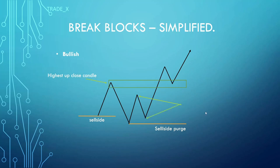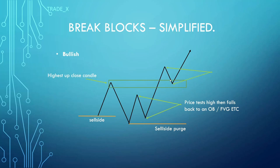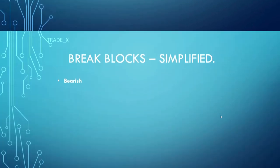Price moves higher, retests the highest up-close candle, an order block, or a fair value gap before moving lower. If price doesn't break the low, it falls into another order block, mitigation block, or a PD array for price to move higher. We then see price test the high, fall back to an order block or fair value gap, and then price moves higher and breaks through the highest up-close candle — this validates it as the breaker. Price then retests it, and that is your breaker block entry to move higher.